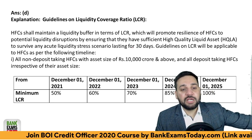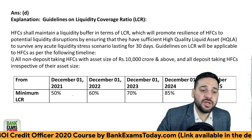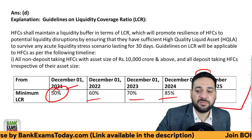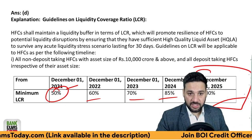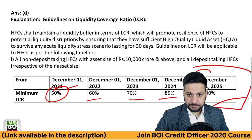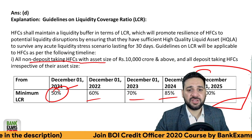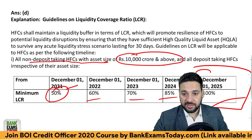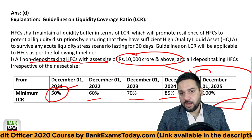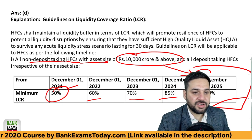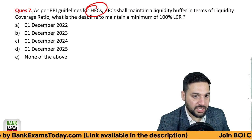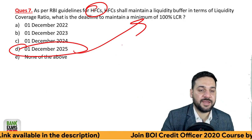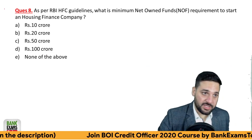The LCR requirement for HFCs is phased: by 1st December it starts at 50 percent, then 60, 70, 85 percent, and by 1st December 2025 it must reach 100 percent. All non-deposit-taking HFCs with asset size of 10,000 crore or above, and all deposit-taking HFCs, must maintain this LCR ratio. The correct answer is D — by 1st December 2025, they must maintain 100 percent LCR.